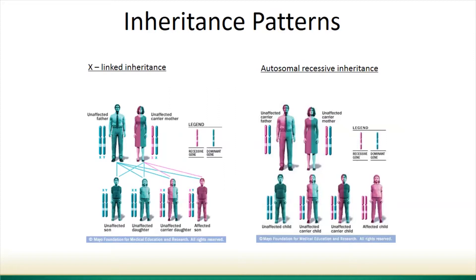Autosomal recessive inheritance is very different — each parent carries the abnormal gene, and every child, regardless of sex, has a 25% chance of being affected by inheriting both abnormal genes. There is also a 50% chance of a child being a carrier for either of the genes from each parent, which may matter if they go on to have children with another carrier.